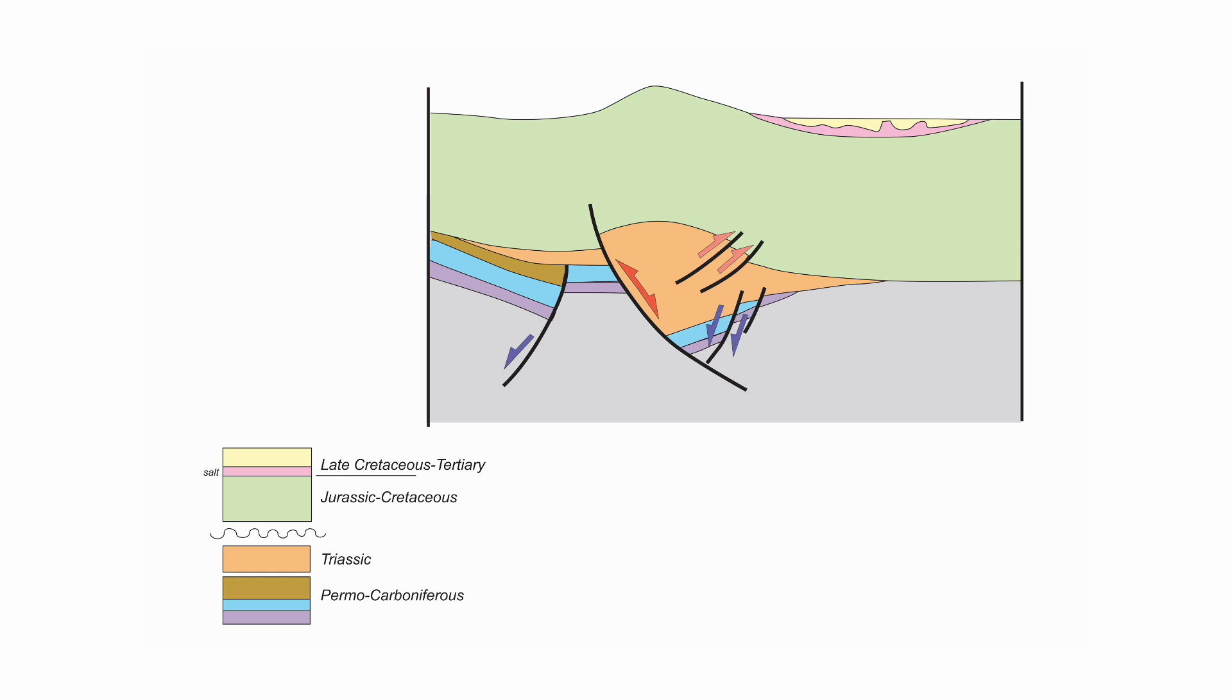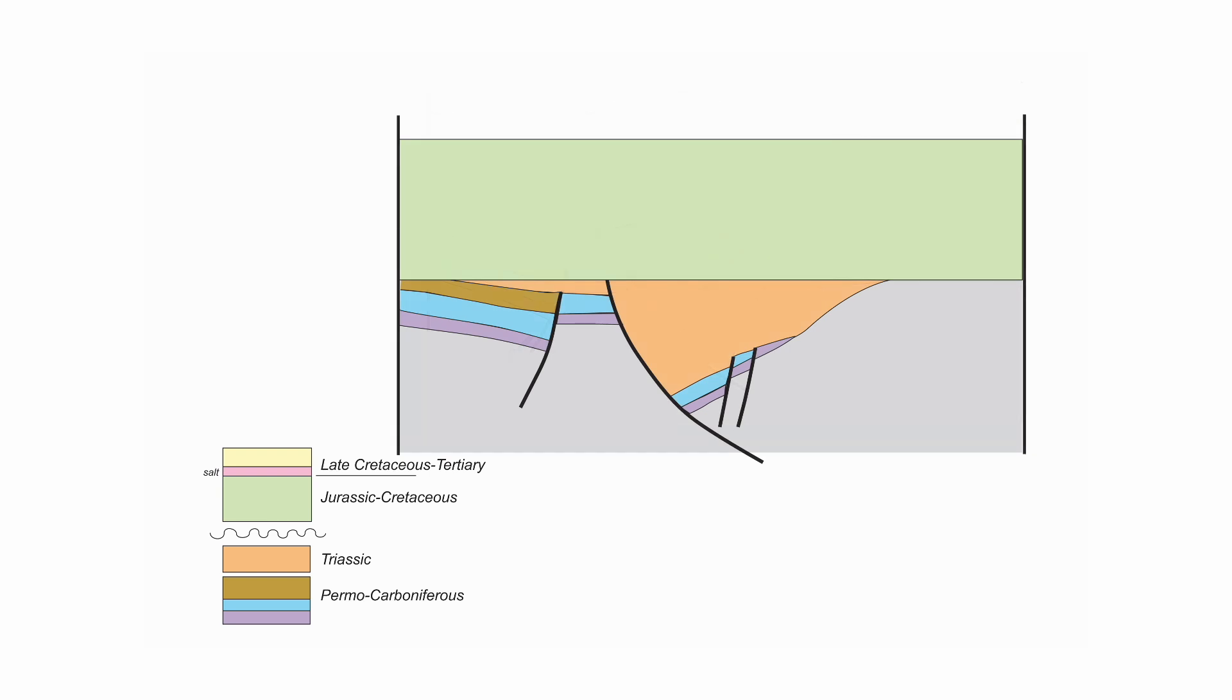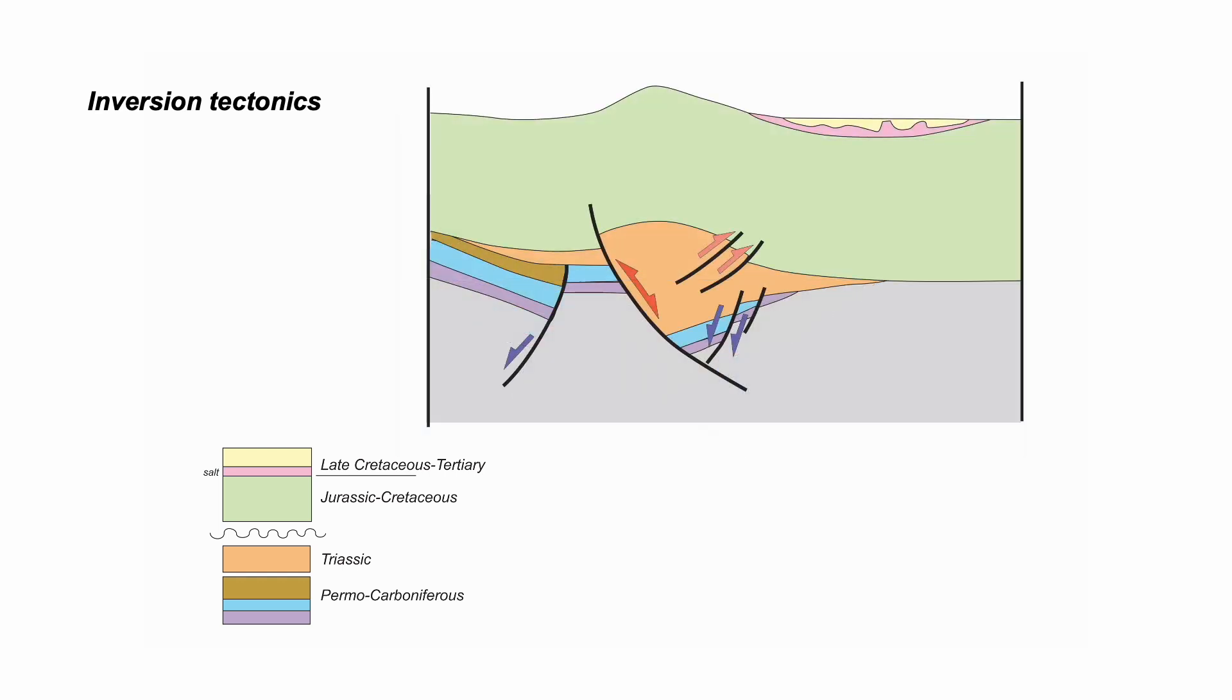We can take off the squash, restore the basin to show its former shape. And all the faults now are normal faults. The compressional reactivation of these normal faults is termed inversion tectonics, switching the sense of movement on the faults, squashing the basin, elevating the rocks on top.